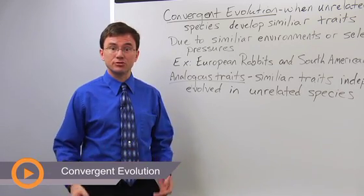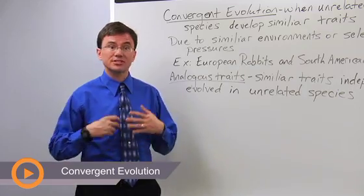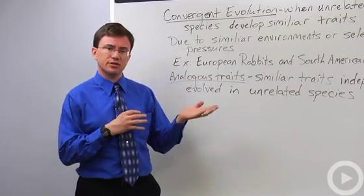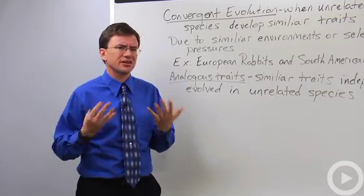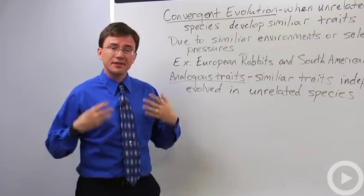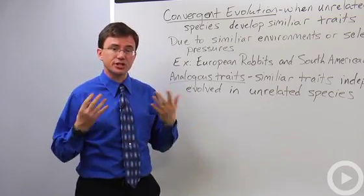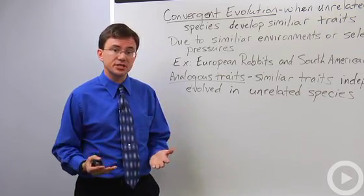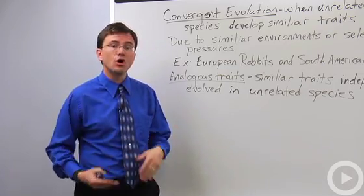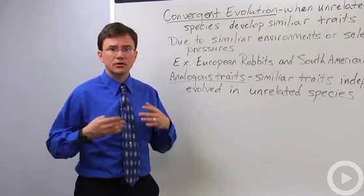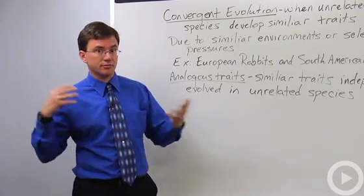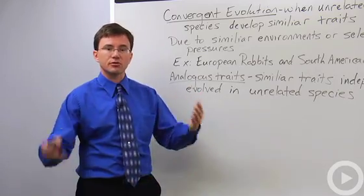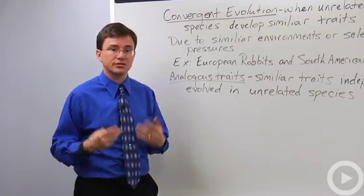One common trend seen in evolution is something known as convergent evolution. Some people make a distinction between this and parallel evolution, but a lot of people just consider them the same thing. The basic idea is when two different organisms — two different species that are not closely related — wind up looking similar. And it's not because they come from a common ancestor; it's because they live in similar environments or they're under similar kinds of selective pressure.